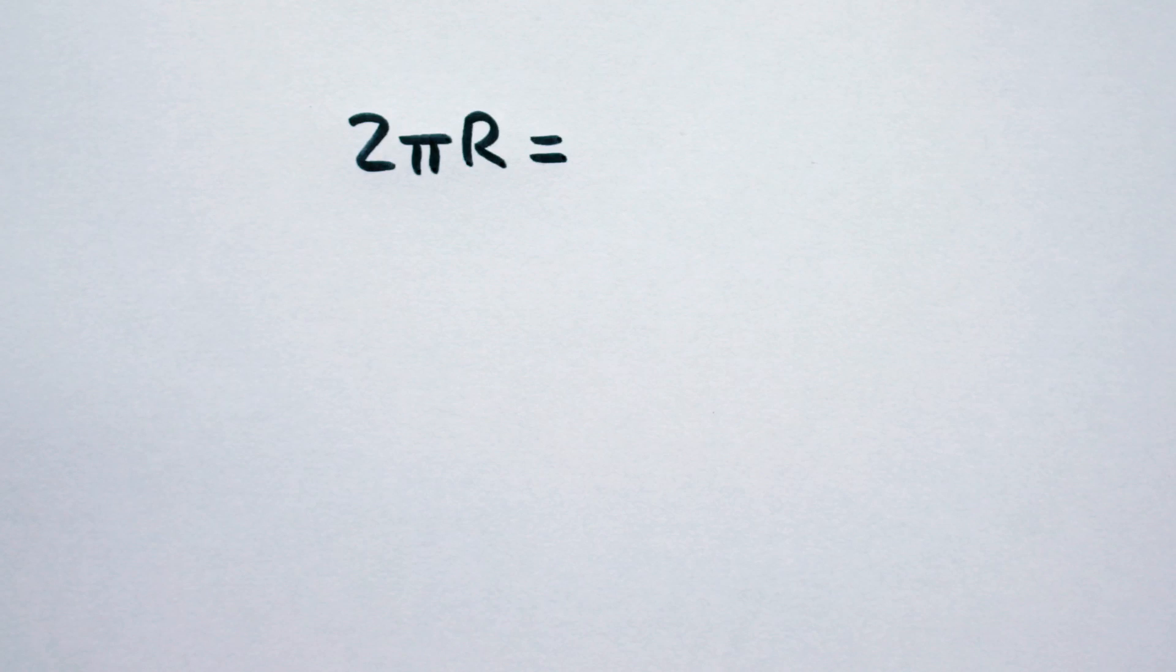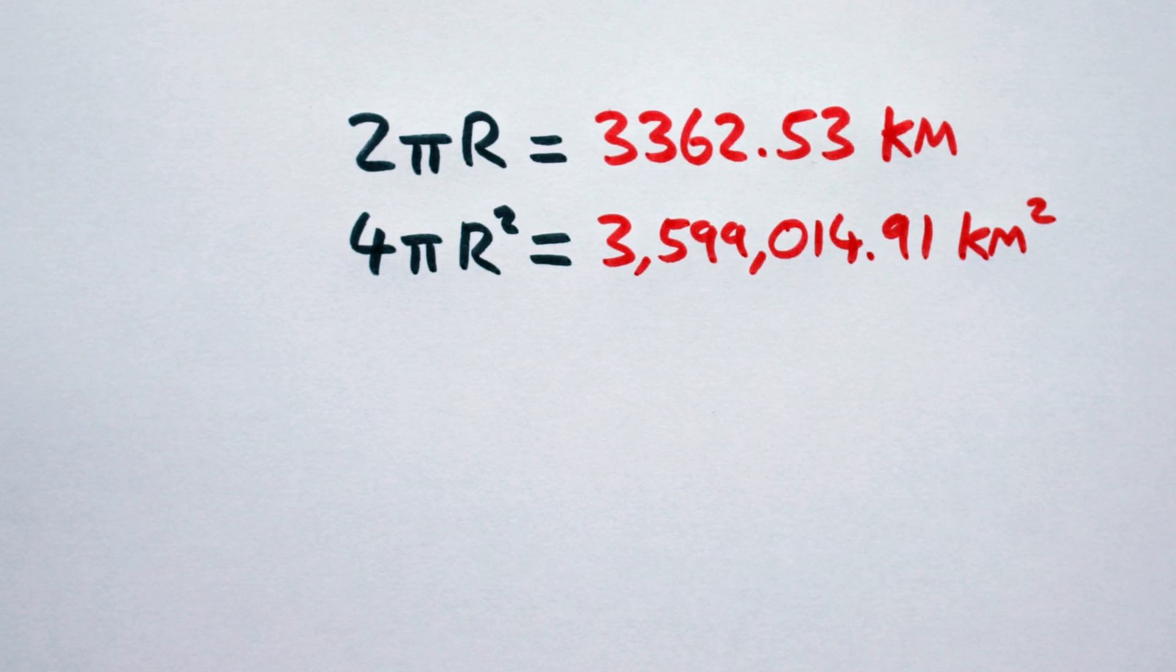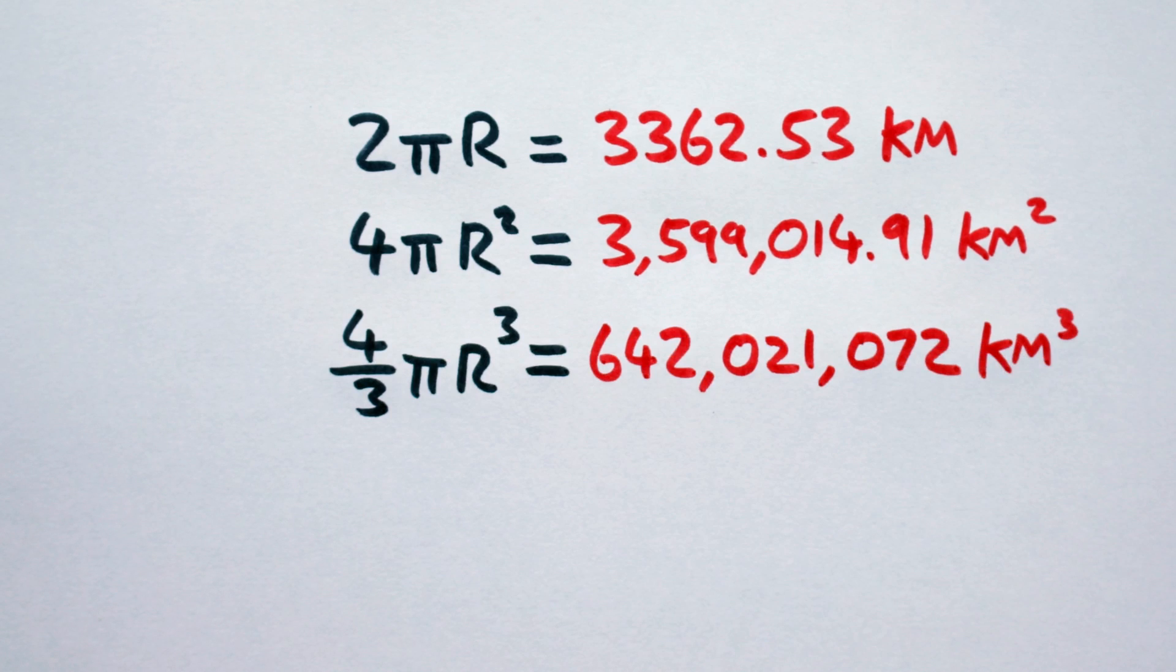In this case, 2 pi times the radius gives us a circumference of about 3,300 kilometers. 4 pi times the radius squared gives us a surface area of about 3.5 million square kilometers. And finally, 4 over 3 pi times the radius cubed gives us a volume of just over 600 million cubic kilometers.